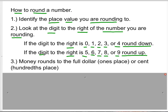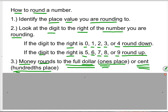Remember, if they're talking about money, money rounds to the nearest full dollar, which is the ones place, or to the cent, which is the hundredths place. So if it says round to the full dollar or round to the dollar, you're going to round to the ones place. If it says round to the cent, you're going to round to the hundredths place.